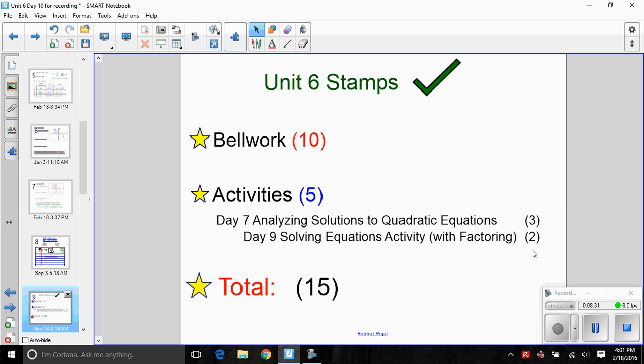Day 9 Solving Equations Activity with Factoring, that was last class, that was 2 stamps, one at the bottom of side 1 number 4, one at the bottom of side 2 number 8. We'll go ahead and get a single total, and we're going to write that on our unit test next class period. Make sure that you find all these stamps, and we're going to write those next to your name on your unit 6 test, which of course is next class.